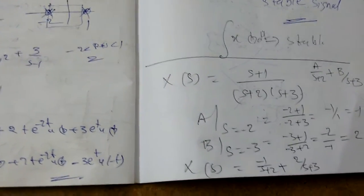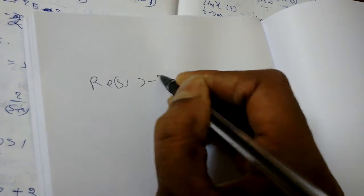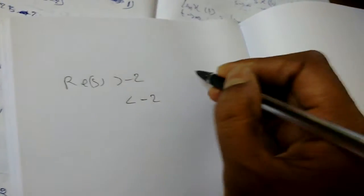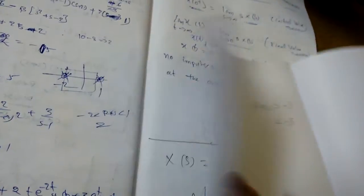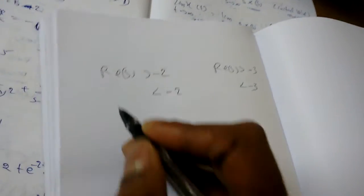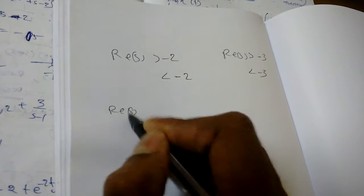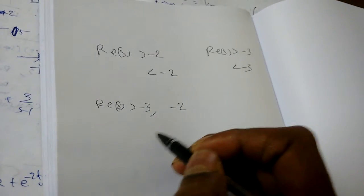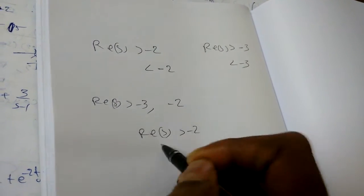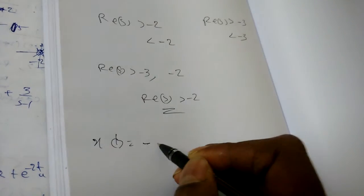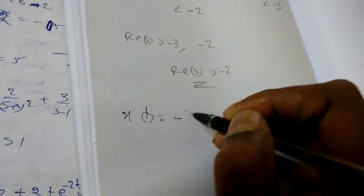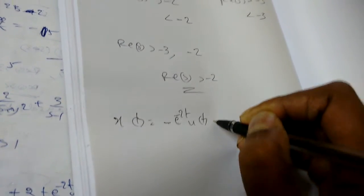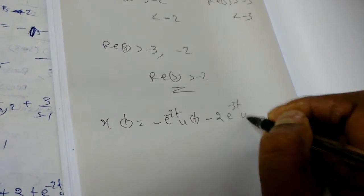To find the inverse Laplace transform we have four conditions depending on the ROC, because we have two poles. The first condition: if Re(s) > -2 (which also means Re(s) > -3), the common ROC is Re(s) > -2. Then x(t) = -e^(-2t)·u(t) + 2e^(-3t)·u(t).